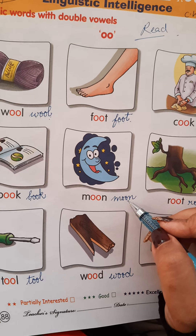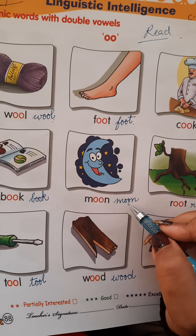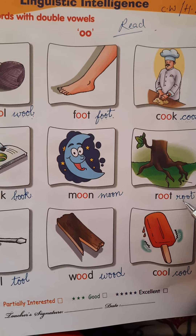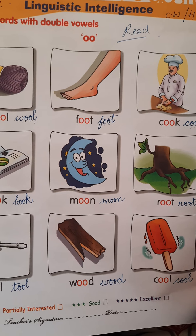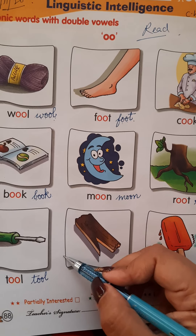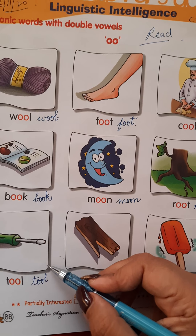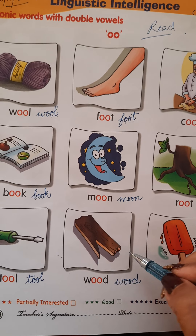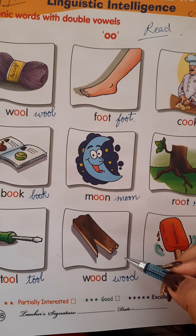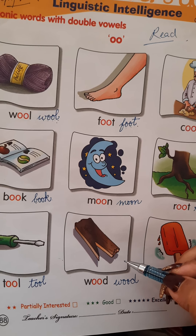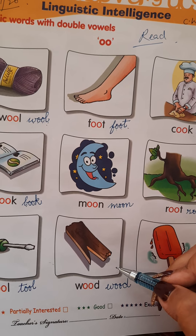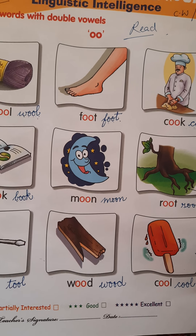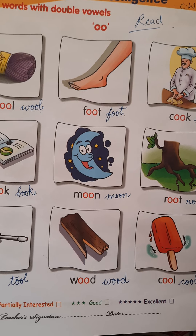M, double O, N — moon. M, O, N — moon. R, O, O, D — root. R, O, O, D — root. T, O, L — tool. T, O, L — tool. W, O, D — wood. W, O, D — wood. C, O, L — cool. C, O, L — cool.